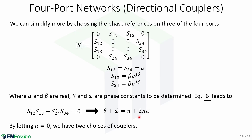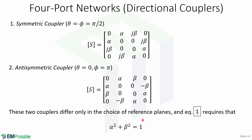Equation 6 leads to this expression. By letting n equal to 0, we can have two choices of couplers. The first choice is a symmetric coupler, in which theta equals phi equals pi over 2, and the phases of the terms having amplitude beta are chosen equal. The second choice is an anti-symmetric coupler, in which theta equals 0 and phi equals pi. The phases of the terms having amplitude beta are chosen to be 180 degrees apart, and the scattering matrix has the following form.